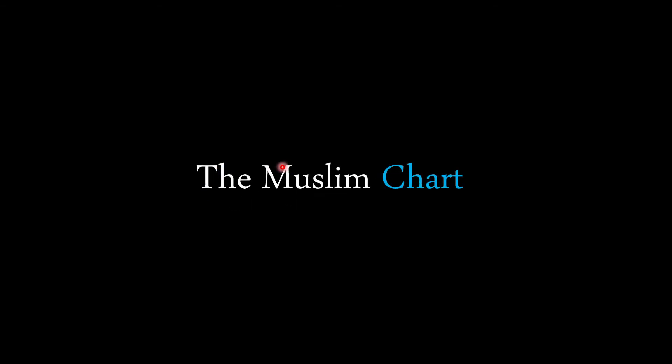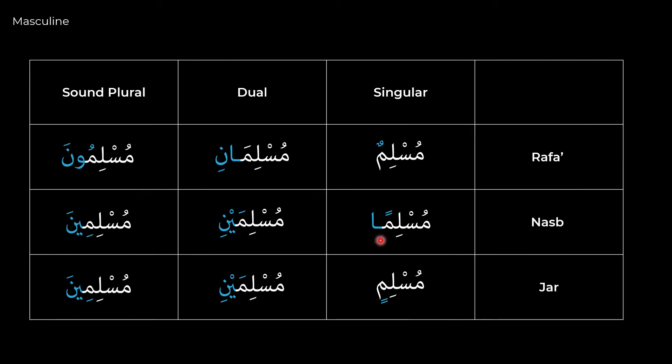When it comes to an ism, how do we get these endings down? It's really critical to tie it all together in what we call the Muslim chart. By memorizing these two charts, you can get this down quite simply — it ties together gender, number, and status all in one place. This chart shows three different statuses: rafa, nasab, and jar. Each status changes what the ism's purpose is in the sentence, so it's critical to understand how to identify them.